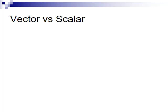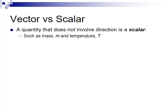There are two general types of physical quantities. A quantity that does not involve a direction is a scalar, such as mass and temperature.